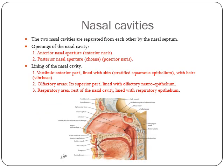The two nasal cavities are separated from each other by the nasal septum. The openings of the nasal cavity are the anterior nasal aperture, which is called the anterior naris, and the posterior nasal aperture, which is called the choana or posterior naris. The lining of the nasal cavity: first, the vestibule or anterior part is lined by skin, which is a stratified squamous epithelium with hair, called vibrissae hair.